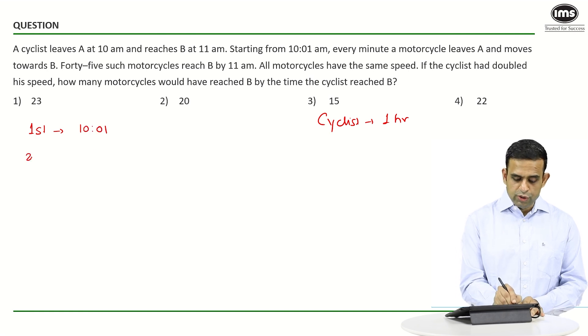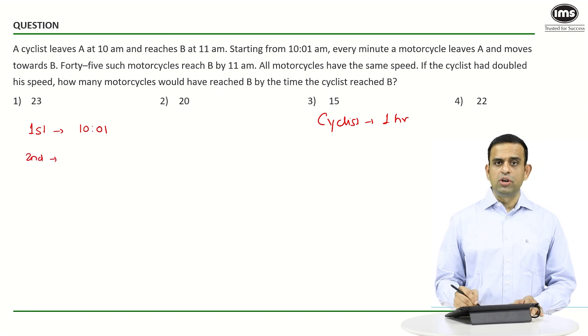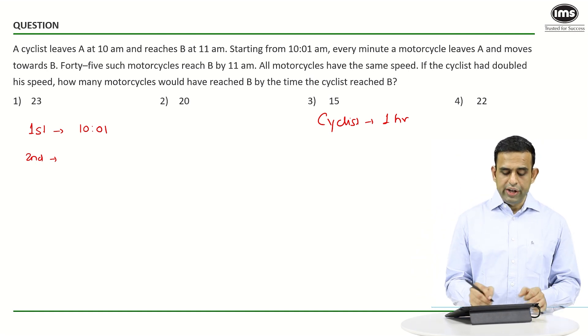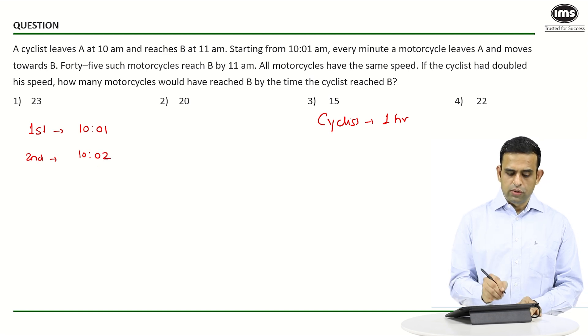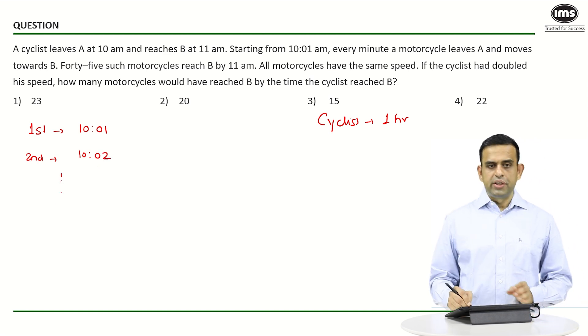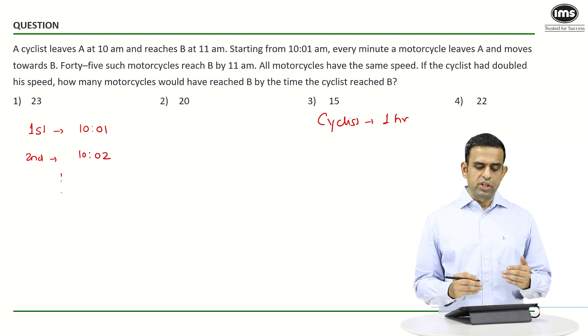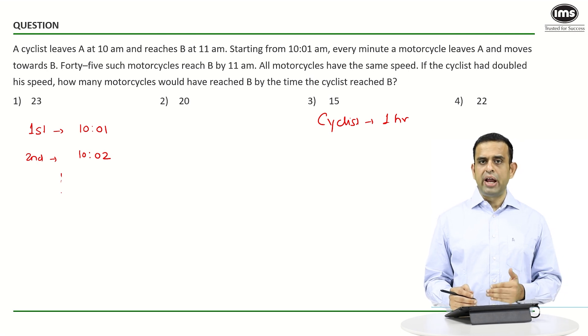The second one leaves at two minutes past 10, and so on. What they are saying is 45 such motorcycles reach B by 11 a.m.